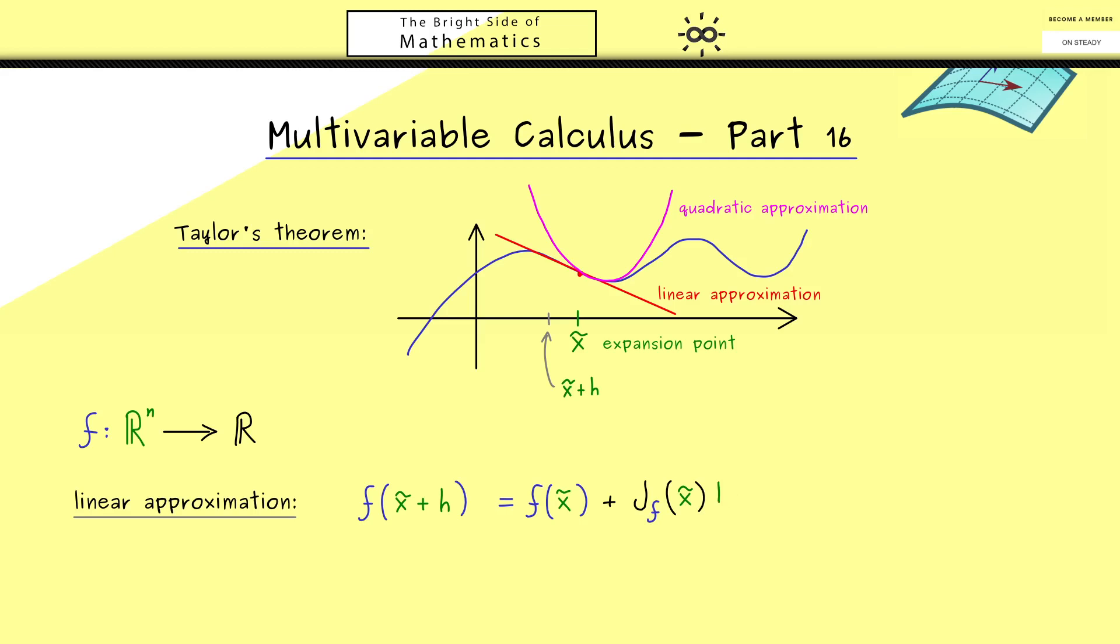Ok, then how good this approximation is, is usually measured with an error term phi. So we have phi(h) with the property that it goes fast to zero when h goes to zero. More precisely, phi(h) divided by the norm of h goes to zero when h goes to zero. So please don't forget, this is essential, such that this term here is the linear approximation for the function f at the expansion point x tilde.